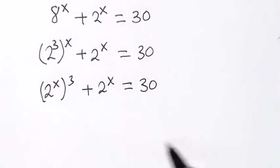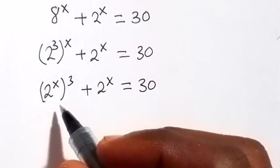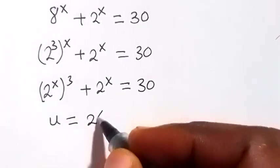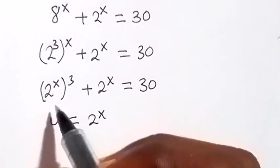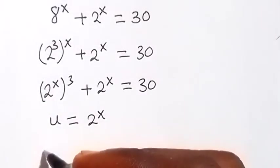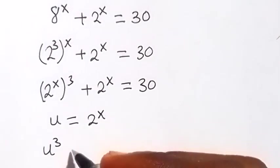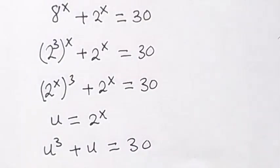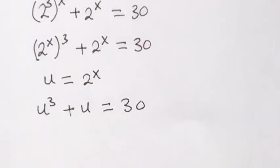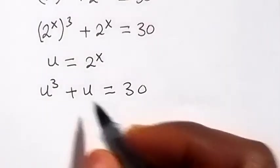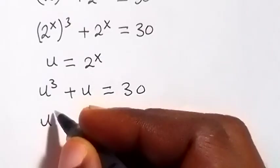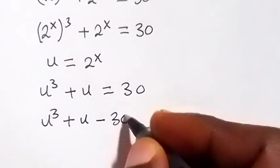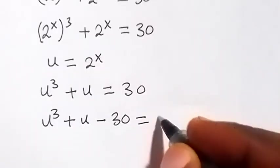From here we can use a letter to represent 2 raised to power x. So let u be equals to 2 raised to power x. Then we write this equation again and we have u raised to power 3 plus u, which equals to 30. Bringing 30 to this side to form an equation, we have u raised to power 3 plus u minus 30 equals to 0.